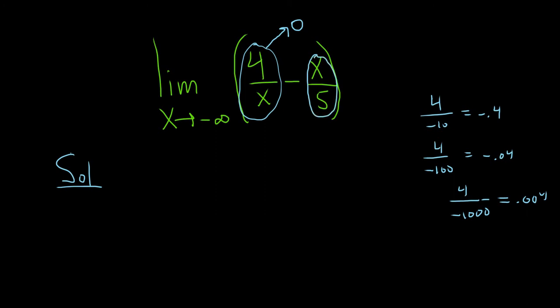This piece here is going to approach negative infinity because x is approaching negative infinity. But then we have another negative here. And negative and negative is going to turn this into positive infinity. The whole thing will approach positive infinity.